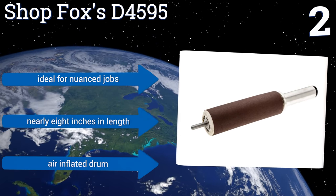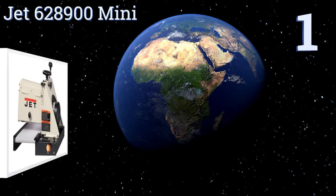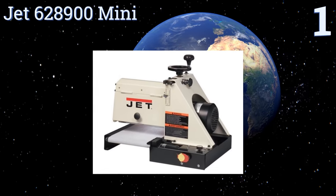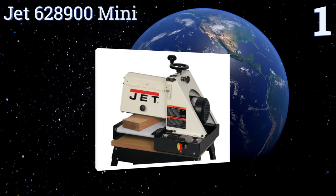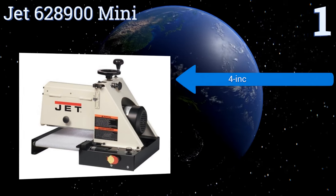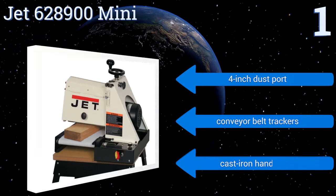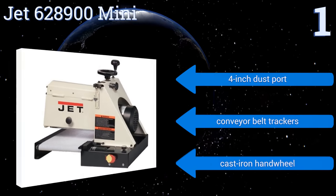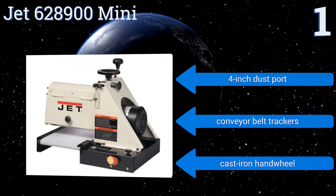And coming in at number one on our list, the Jet 628900 Mini is a 10-inch benchtop drum sander with a lot of capability packed into a smaller build. Among its more useful features is a quick paper change that results in less downtime swapping papers or grades and more time progressing your project. It features a four-inch dust port, conveyor belt trackers, and a cast iron hand wheel.